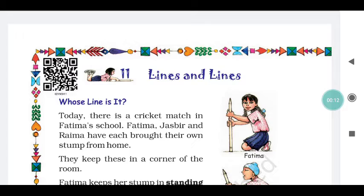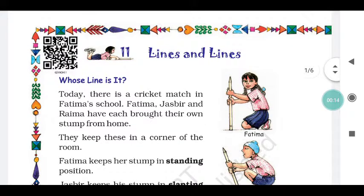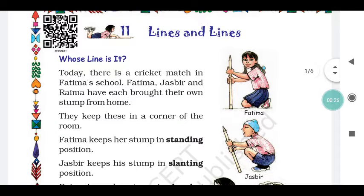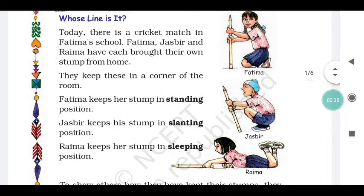Today we will learn about lines. Whose line is it? Today there is a cricket match in Fatima's school. Fatima, Jasbir and Reema have each brought their own stump from home. Fatima, Jasbir and Reema each have one stump and they keep these in a corner of the room.